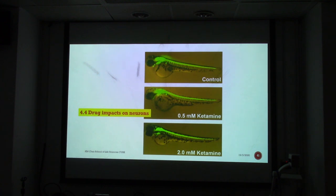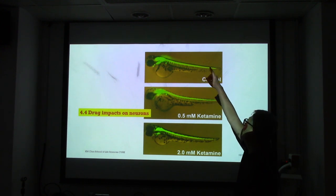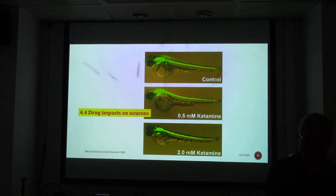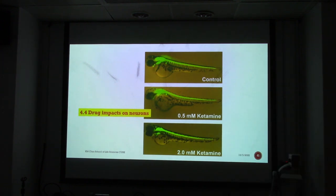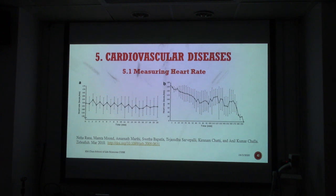Drug impacts on neurons can also be studied. The control is the normal neuron, and then different concentrations of ketamine are applied. The effects of ketamine bring about neurodegeneration — the neuron is not extended enough, and the notochord is not fully developed. Neurons can be stained with GFP to visualize these effects.